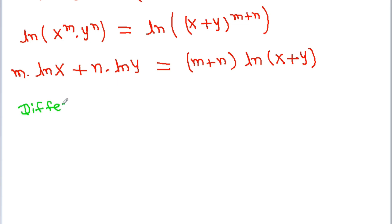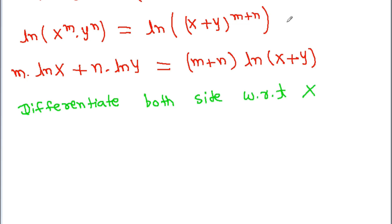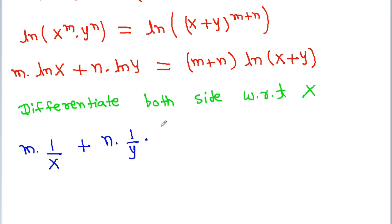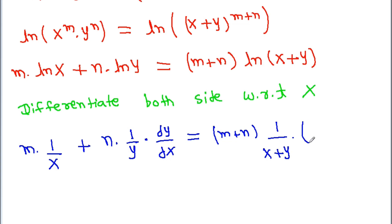Now if we differentiate both sides with respect to x, then here m is constant and differentiation of ln x will be 1 by x, plus n is constant and differentiation of ln y will be 1 by y times dy by dx. On the right side, m plus n is constant and differentiation of ln of x plus y will give 1 by x plus y times the quantity 1 plus dy by dx.